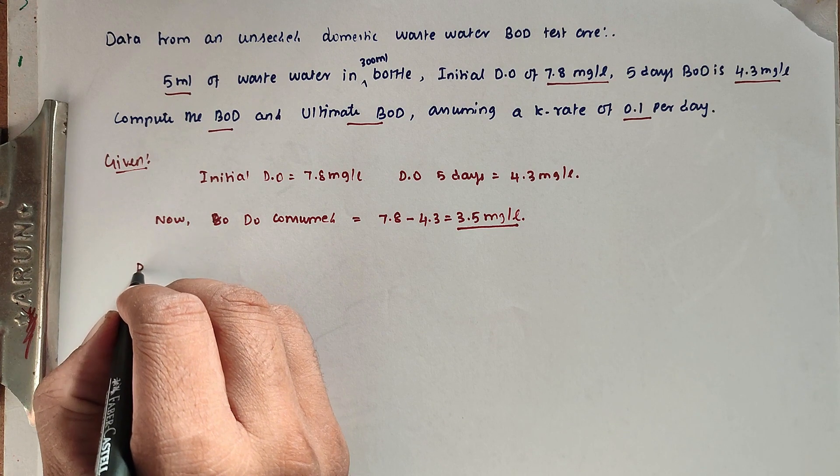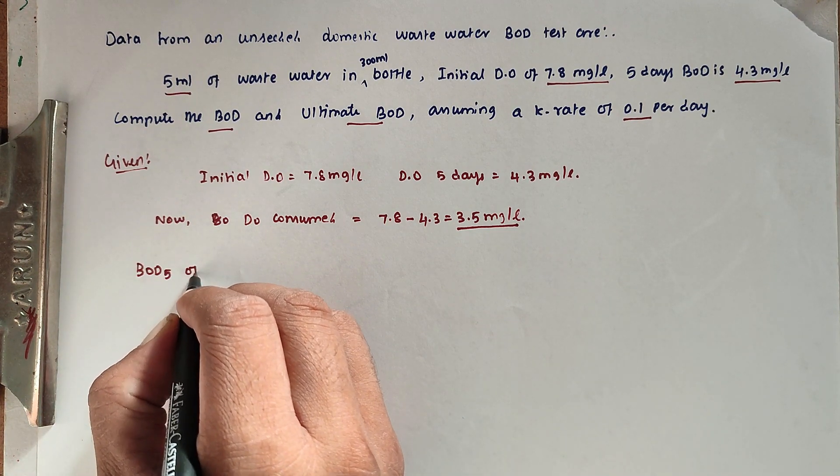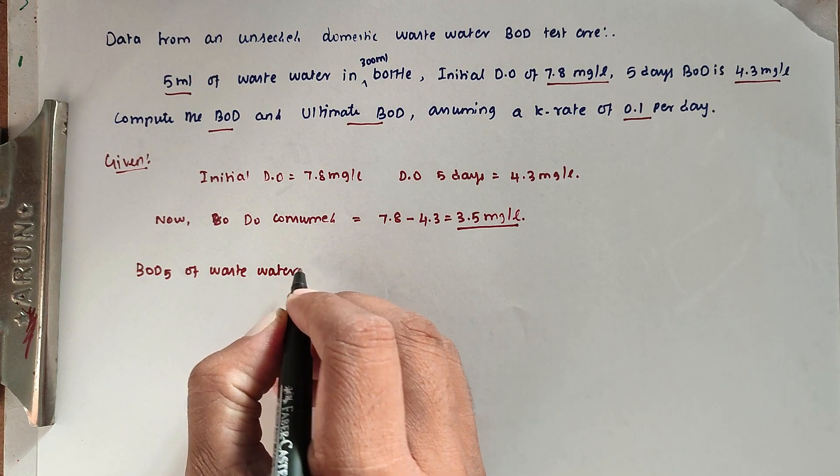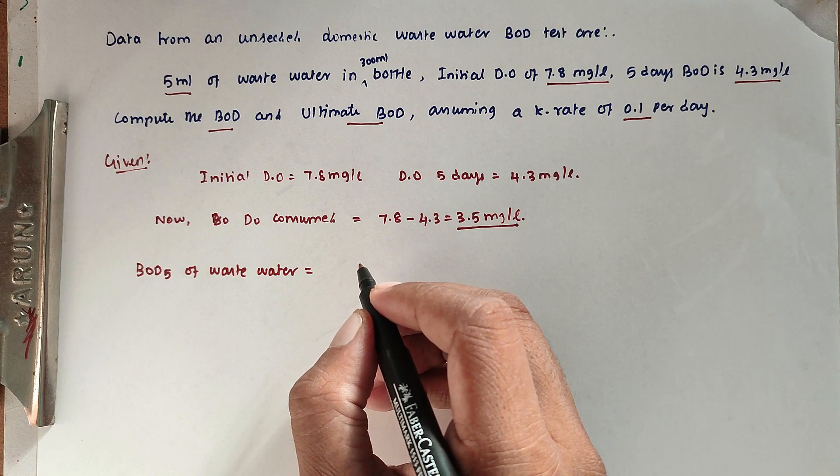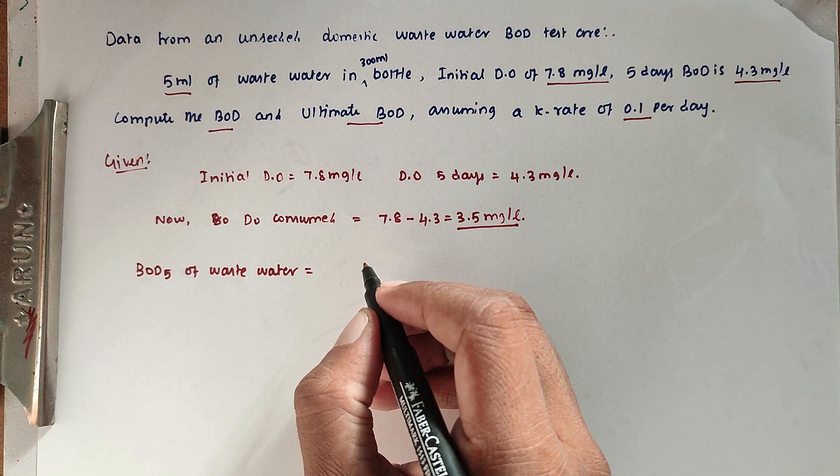For BOD5 of wastewater, we use the formula: DO consumed by diluted sample times volume of diluted sample, divided by volume of undiluted sewage used.